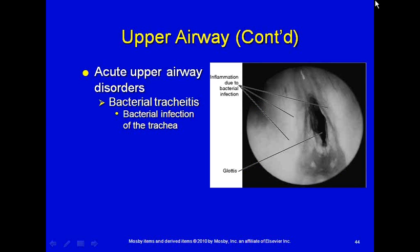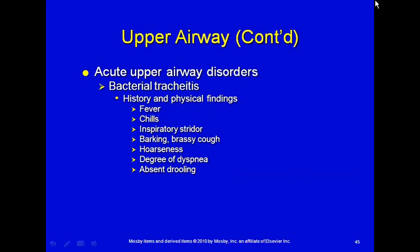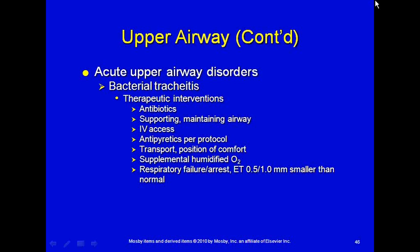Bacterial tracheitis is a bacterial infection of the trachea itself. The patient will have fever, chills, inspiratory stridor, a barky brassy cough, and hoarseness. Depending on severity there will be varying degrees of shortness of breath, but they won't be drooling since they don't have difficulty swallowing. It's treated with antibiotics. Pre-hospital, support the airway, establish an IV, give something for fever, transport in the position of comfort with supplemental oxygen, and be prepared for respiratory failure. If intubation is needed, use a tube half to one whole size smaller than normal because of the tracheal inflammation.